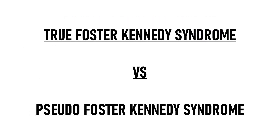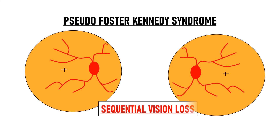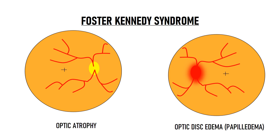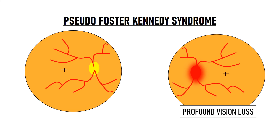How will you differentiate between Foster Kennedy syndrome and pseudo Foster Kennedy syndrome? First of all, the vision loss in pseudo Foster Kennedy syndrome will be sequential — both eyes are not affected at the same time. The patient will give a history of vision loss in one eye a few years ago and now has vision loss in the other eye. Secondly, the edematous eye in Foster Kennedy syndrome will have good vision because it is papilledema and not papillitis, while vision loss in the eye with optic disc edema will be profound in pseudo Foster Kennedy syndrome because the cause is AION.